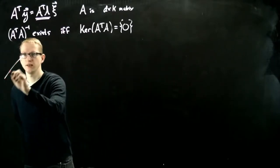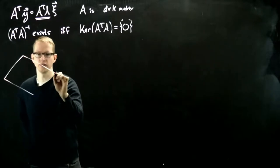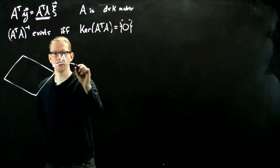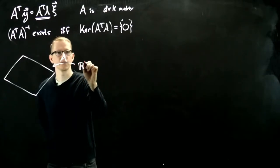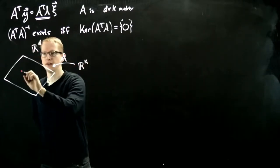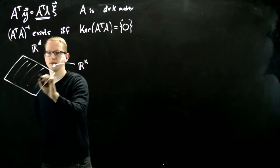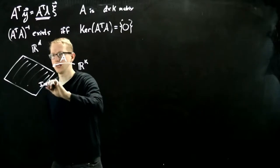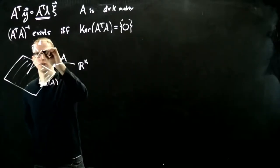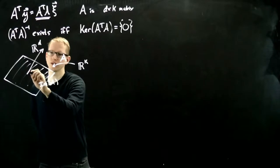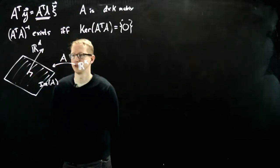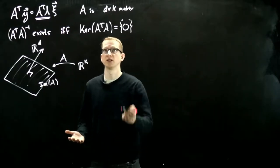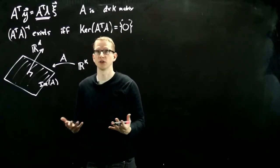To understand when we can apply this method, let's suppose that this is the matrix A. A goes from RK, this is RD here, and this here is the image of A. If we take the orthogonal complement of this image, unfortunately I can only draw the orthogonal complement as having a single dimension, but you could imagine that it has a much larger dimension, especially if D is much larger than K.